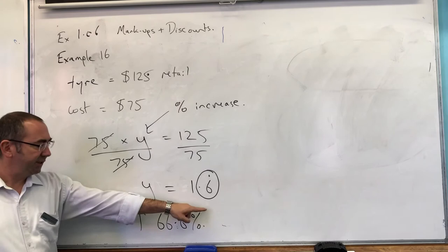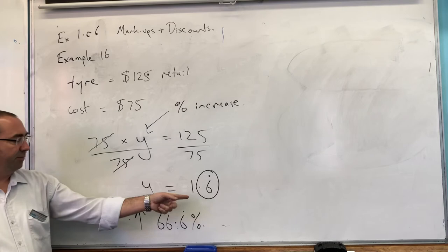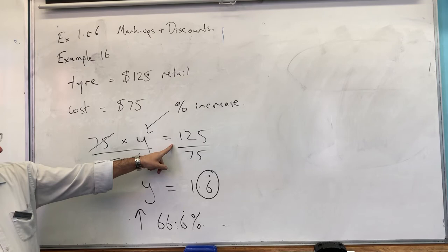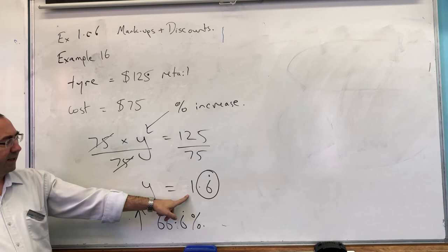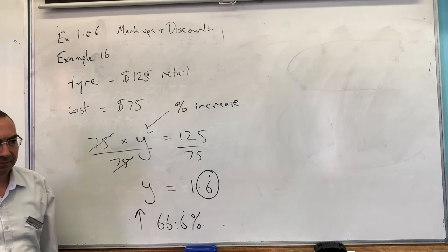Or another way of thinking about that is subtract the one. Because what if it actually went up by 2.6 percent? So what if Y came out at 2.6 recurring? Your actual answer would be 1.6. So subtract the one at the end is what I'm saying.